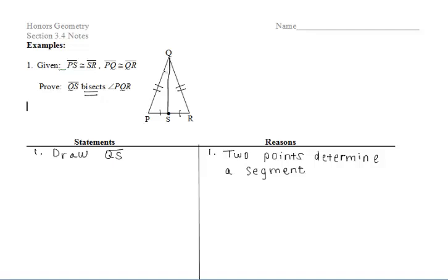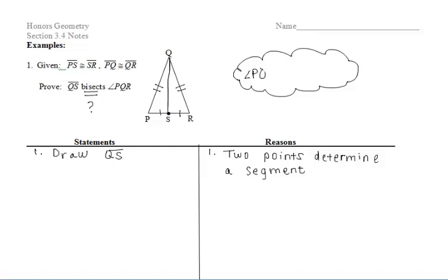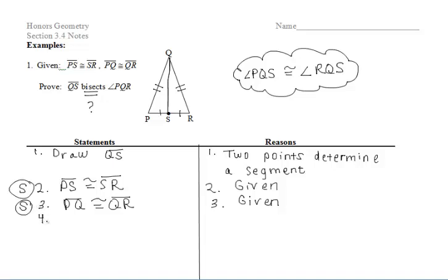Now let's think about what we want to prove. We want to prove that that ray bisects the large angle PQR at the top. So we're thinking backwards — which two angles would be congruent if that ray bisected the angle? The answer is the two smaller angles at the top: angle PQS would have to be congruent to angle RQS. So if we could get those two angles congruent, we can say that that ray bisects the angle.